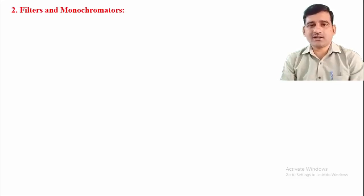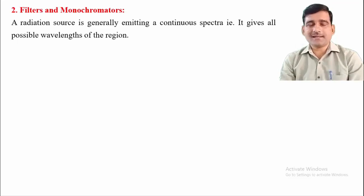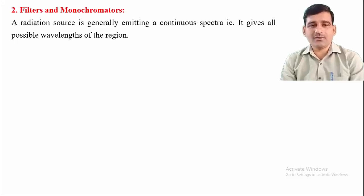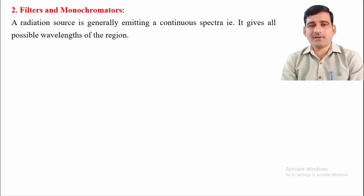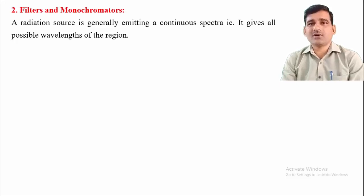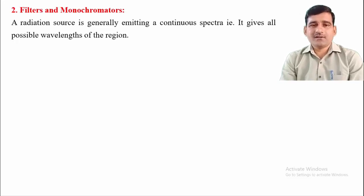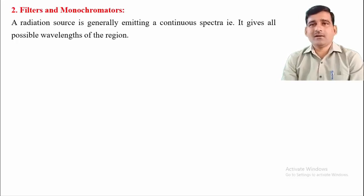Filters and monochromators are two different terms. Filters are devices which can transmit only a desired wavelength of light — they filter the light. A filter absorbs all other radiation and transmits only a particular band of light, giving a bandwidth of around 25 nanometers. A radiation source generally emits a continuous spectrum from 400 to 800 nanometers in the visible region, and from that range we require a particular wavelength, for which we need filters or monochromators.